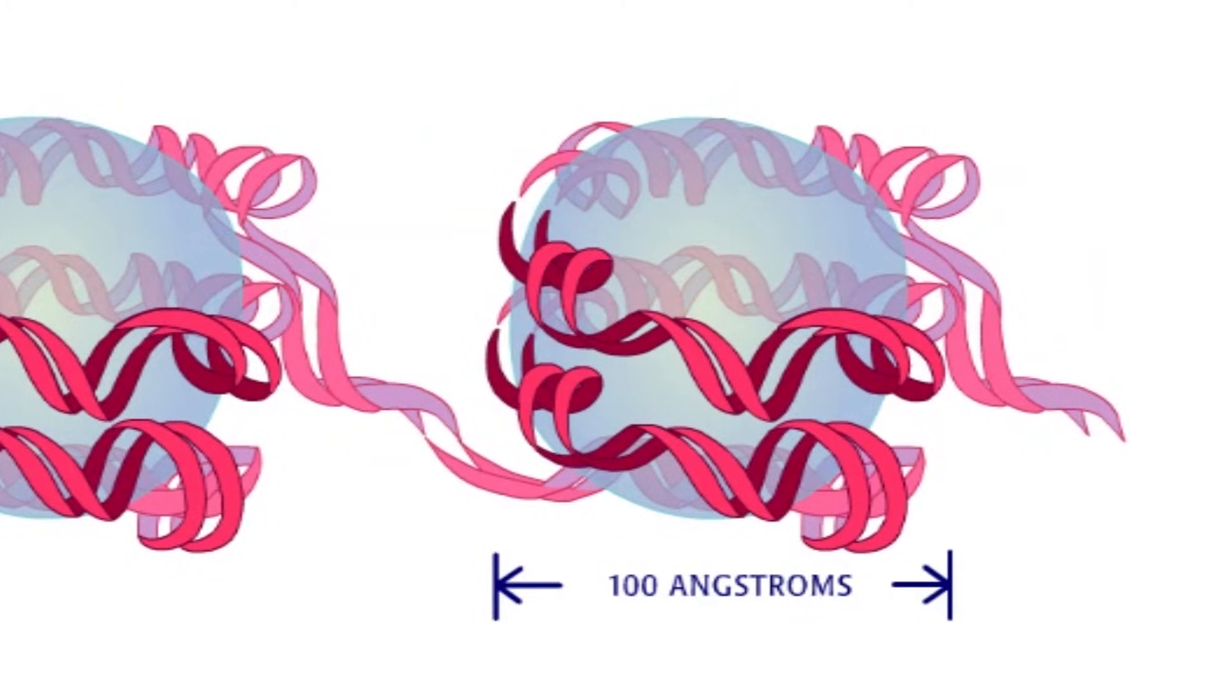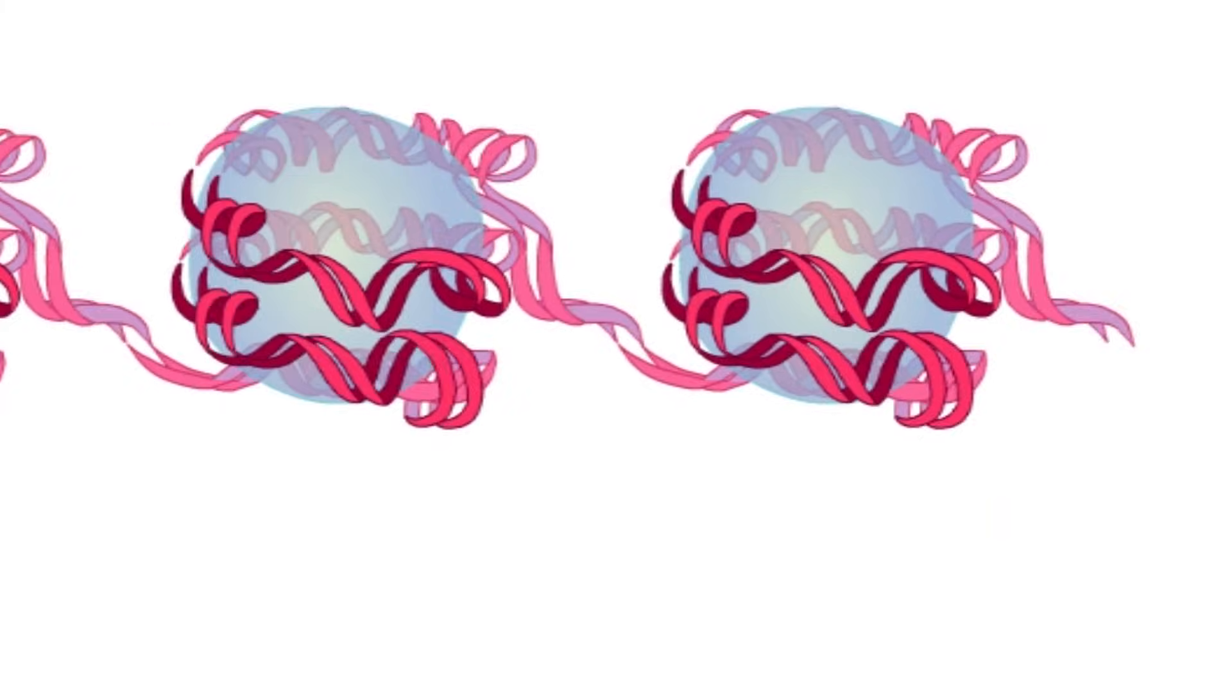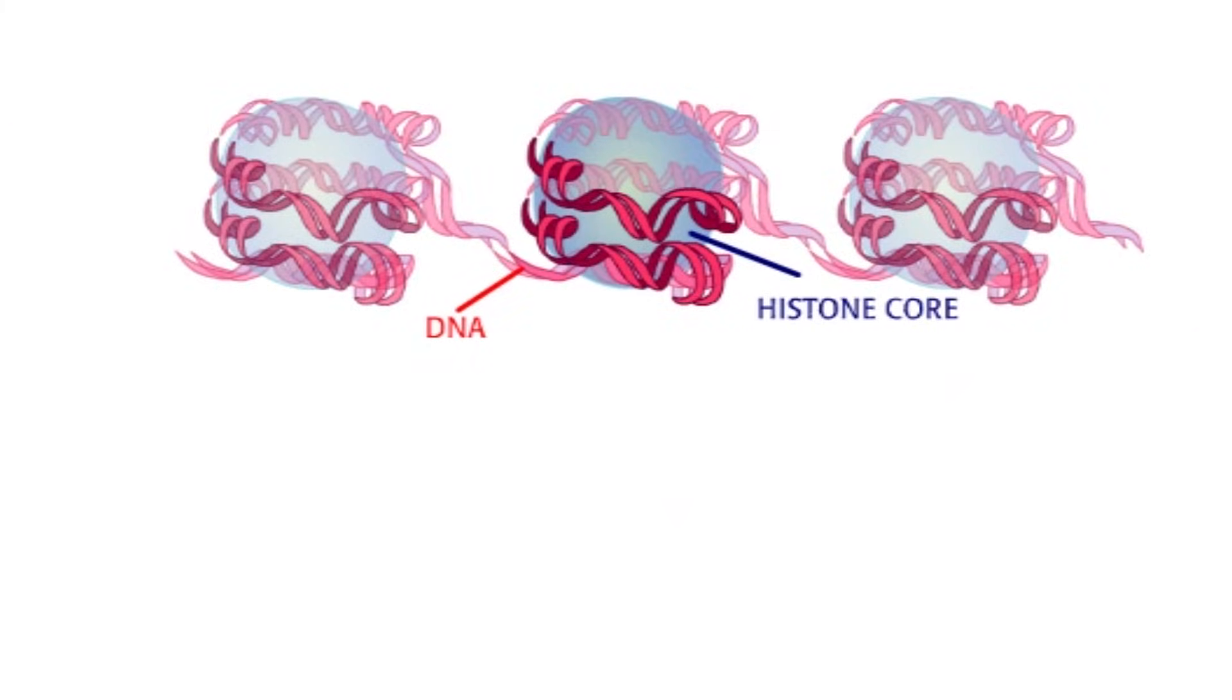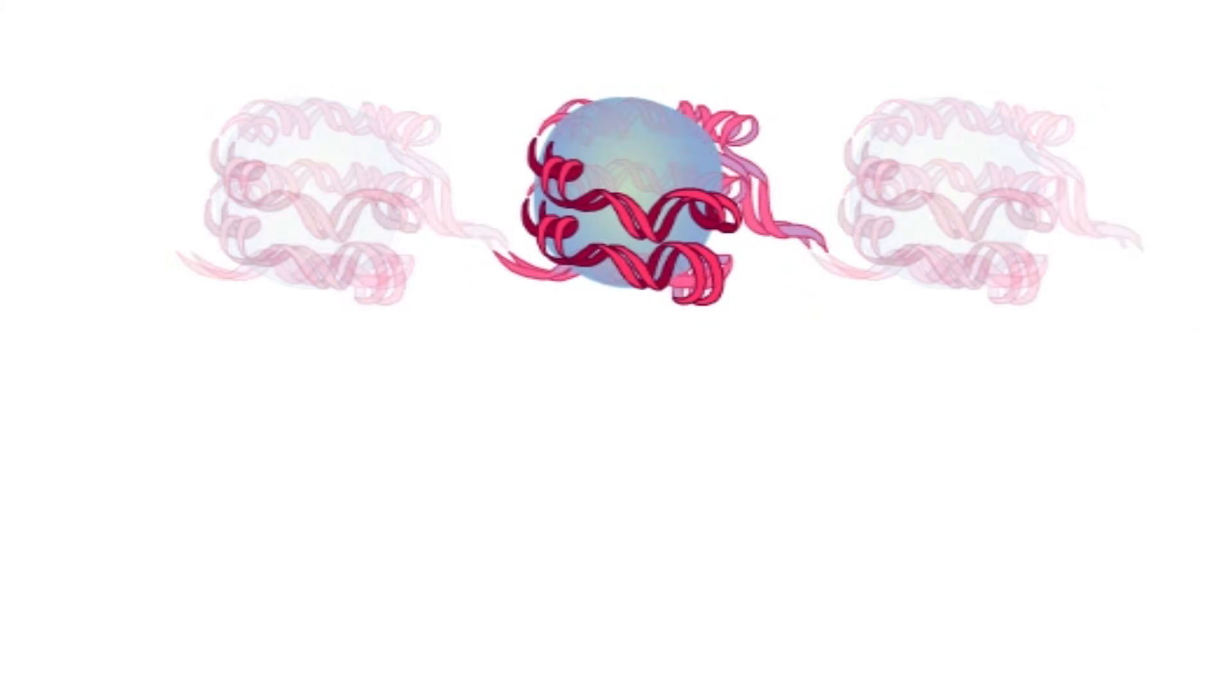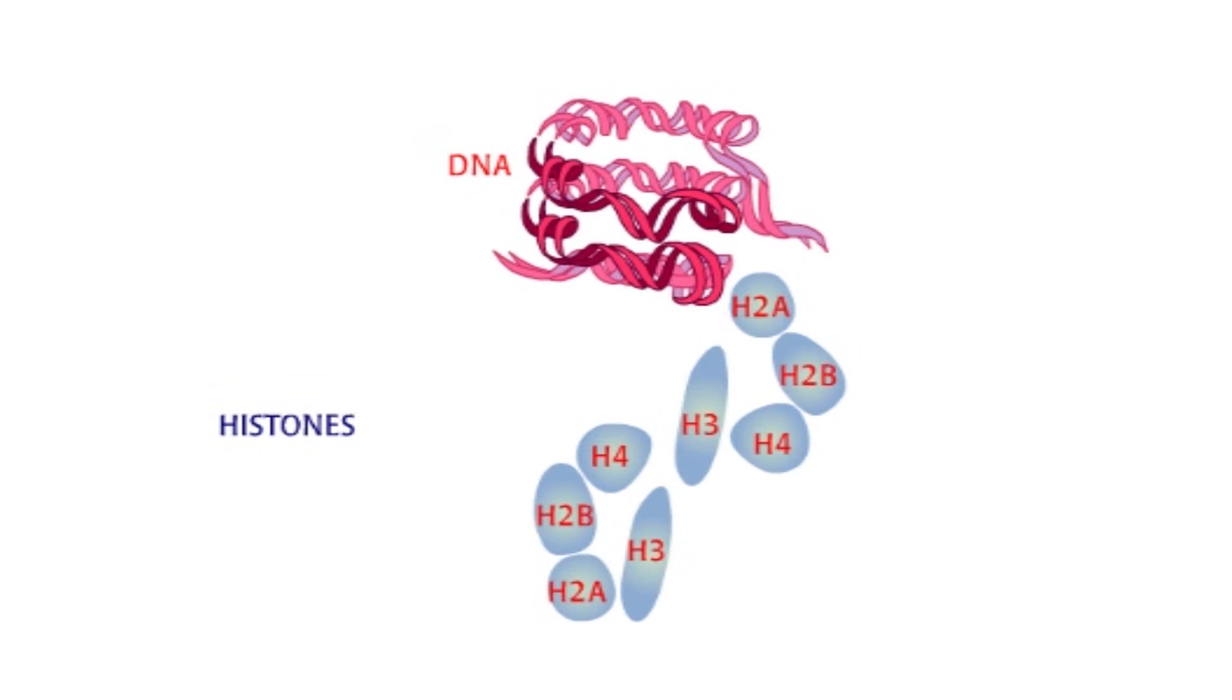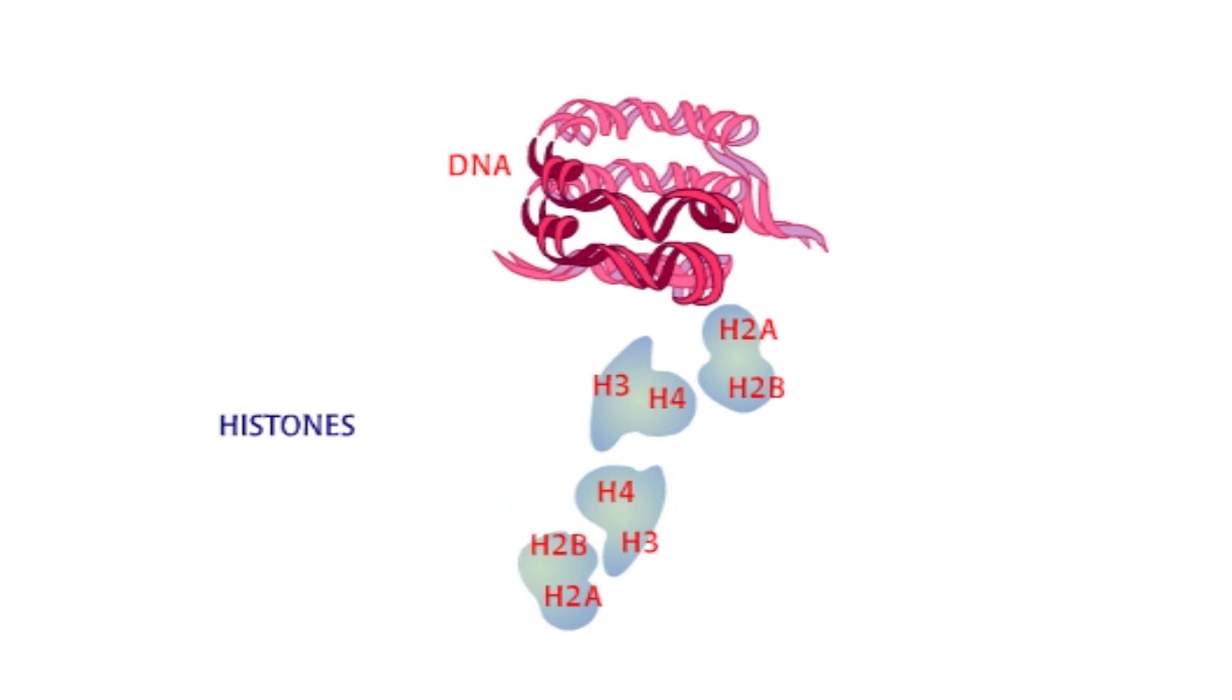Roger Kornberg confirmed this model through experiments. He also figured out the arrangement of histones in the core. He individually purified the histones and figured out that H2A and H2B stick together, as do H3 and H4.